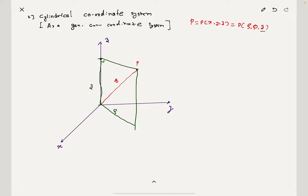The value of Rho — Rho is the radial distance. Theta — sorry, not theta — Phi is the azimuthal angle, the angle made by Rho with the X axis. That is Phi. And Z. So we have Rho, Phi, and Z. P is a function of Rho, Phi, and Z.